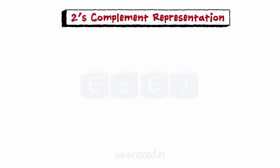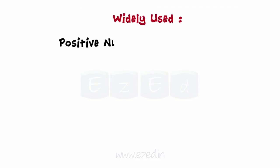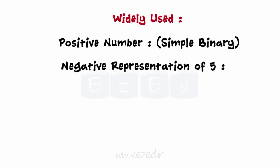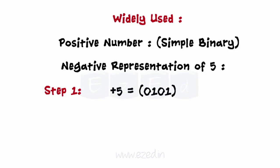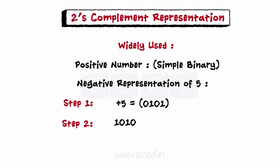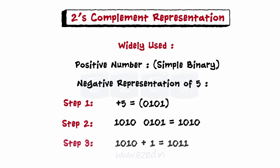Moving on to two's complement representation. This is the most widely used method of representation. Positive numbers are represented as they are. To get a negative number: (1) write the positive number in binary; (2) take one's complement — change all zeros to ones and ones to zeros; then add one to the number.